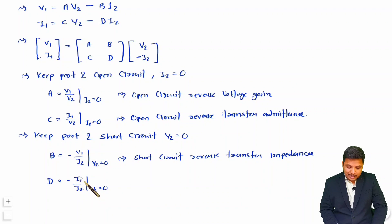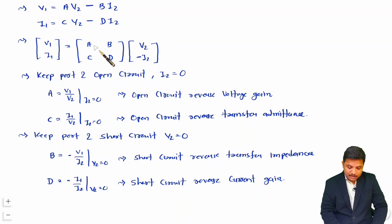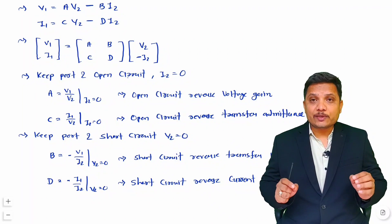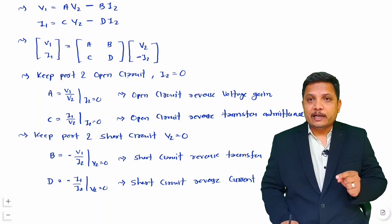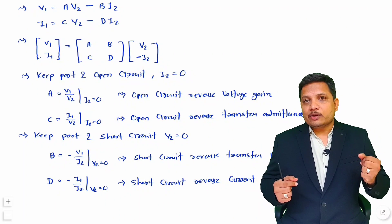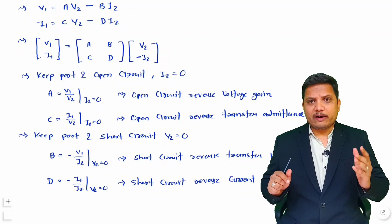D is a ratio of currents — it is a current gain. Since it is input current divided by output current, it is reverse current gain measured at short circuit — so D is the short-circuit reverse current gain. To summarize, for measuring ABCD parameters we make adjustments at the output port only: once with output open circuit and once with output short circuit. I hope you understood this. Thank you for watching.